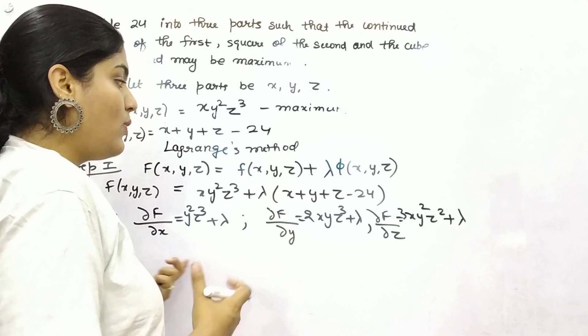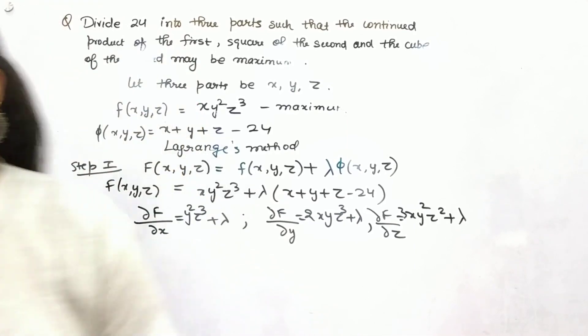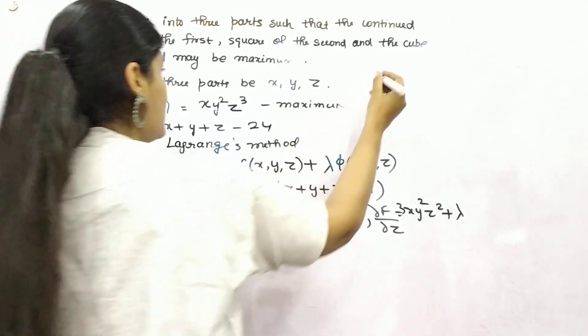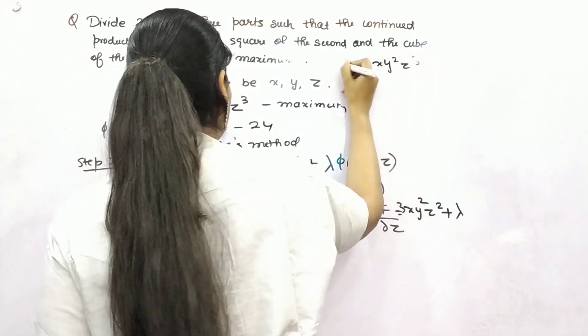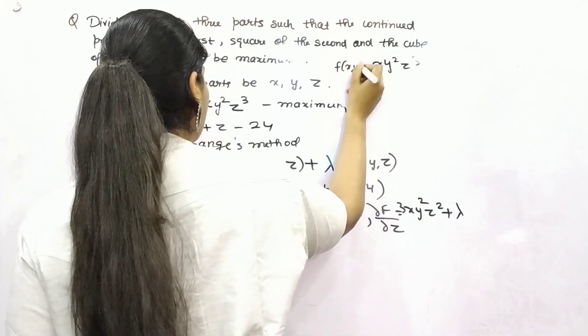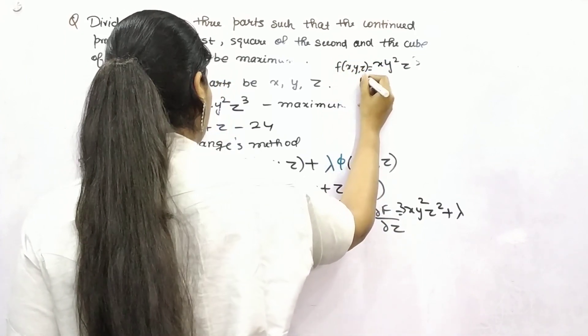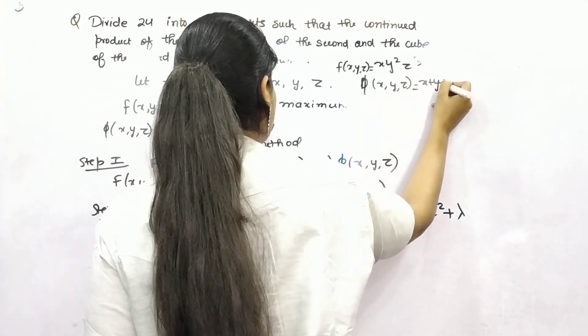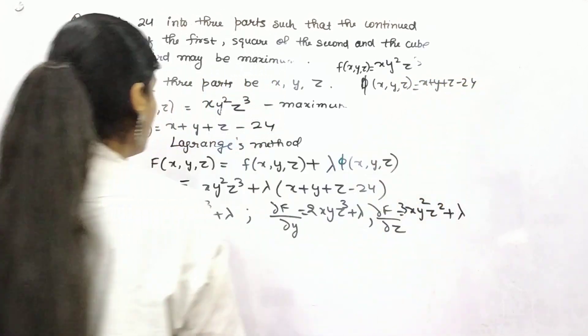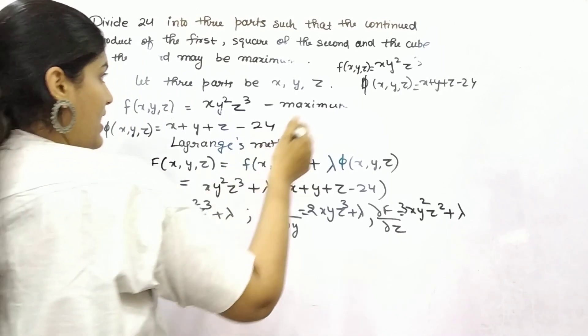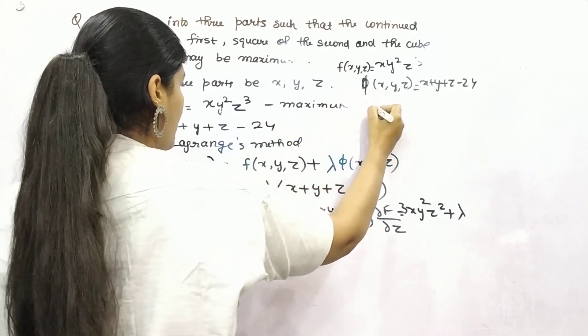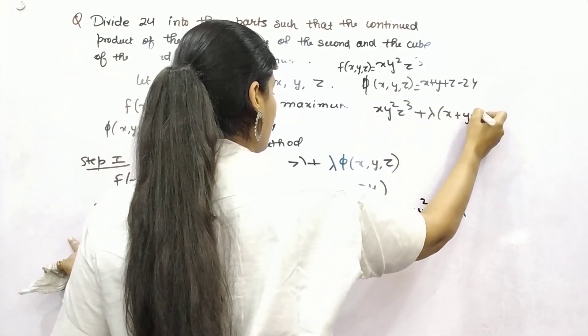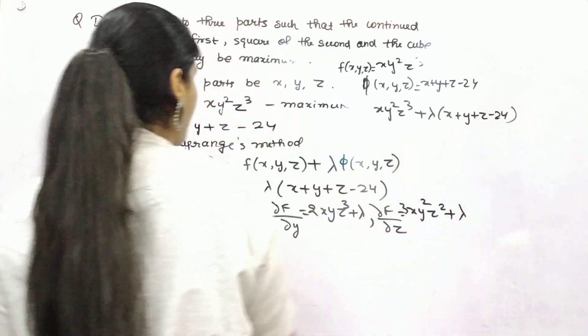Now if you equate all of these as 0, so how we can do it? Let's see. Let me write here your function. This is your function f(x,y,z) = x * y² * z³. This is another function, which is x plus y plus z minus 24.